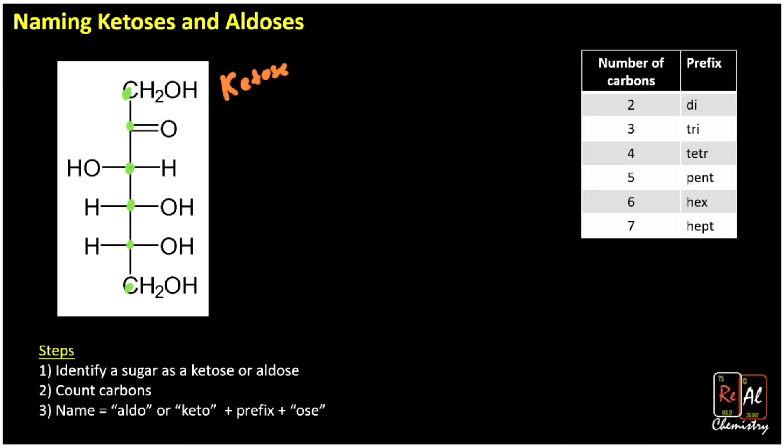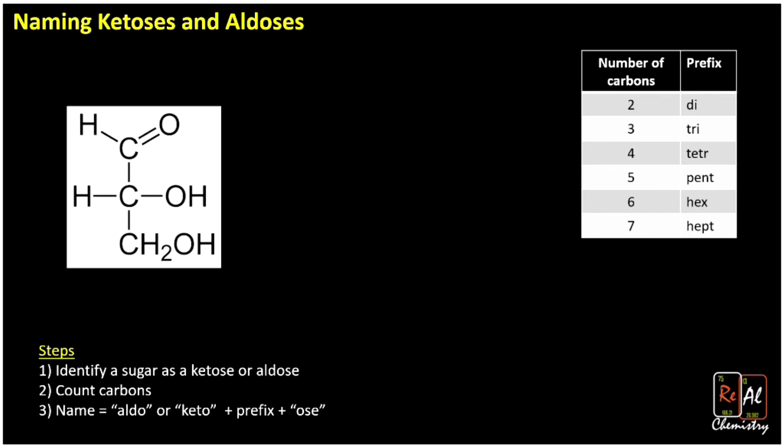So we're going to name this keto plus the prefix, which is hex in this case, plus -ose. And I lied, we're going to do one more practice problem after this one. Maybe we'll have one that doesn't have six carbons.